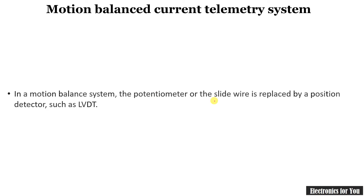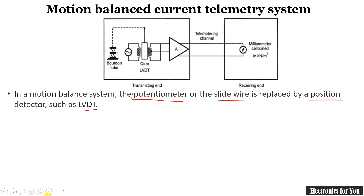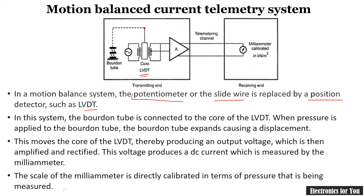In the motion balance current telemetry system, the slide wire potentiometer is replaced by an LVDT. The core of this LVDT is connected to the Bordon tube. Whenever pressure is applied, the Bordon tube will try to expand, resulting in the movement of this core. The output voltage of the LVDT is directly proportional to the change in displacement. As there is expansion in the Bordon tube, there will be a change in position of this core, so the output voltage is directly proportional to the movement, and the change in current is directly proportional to the pressure applied.